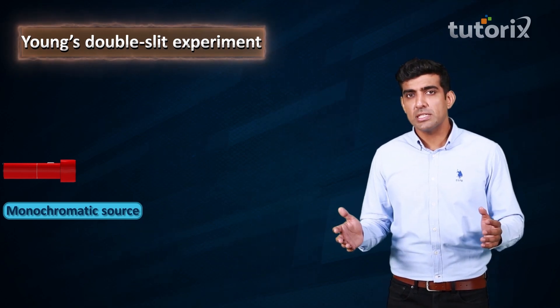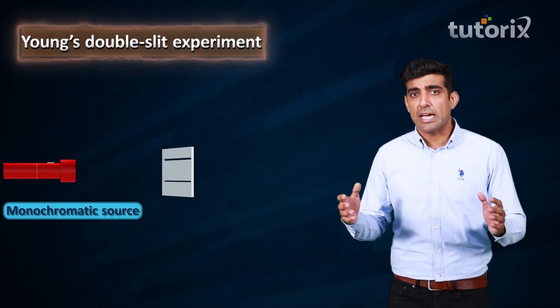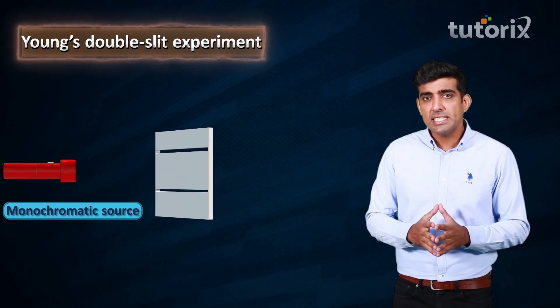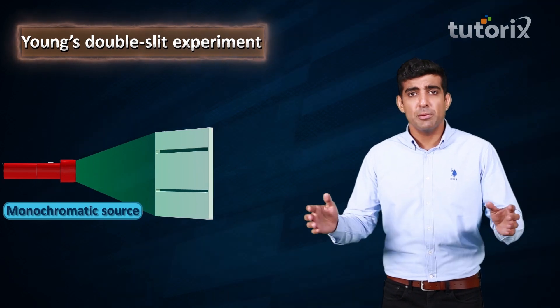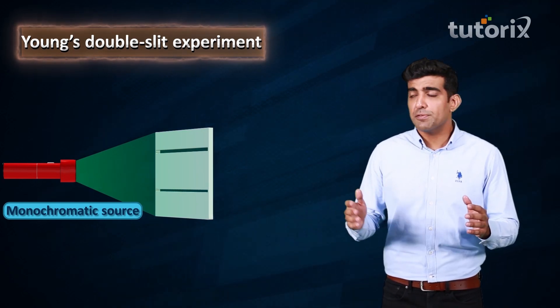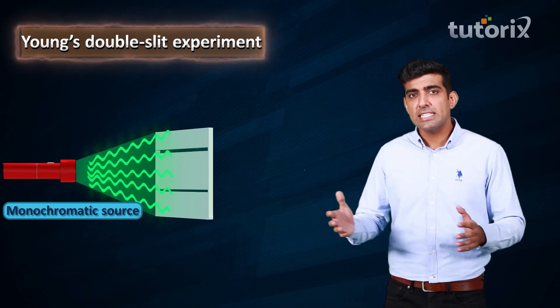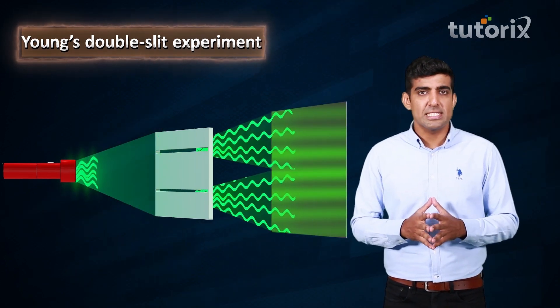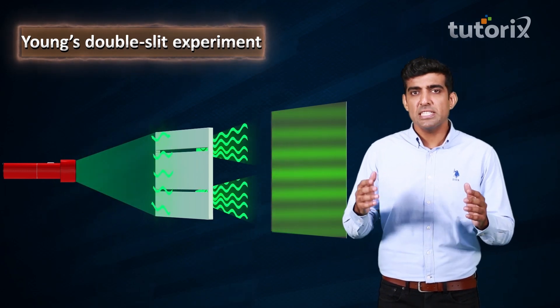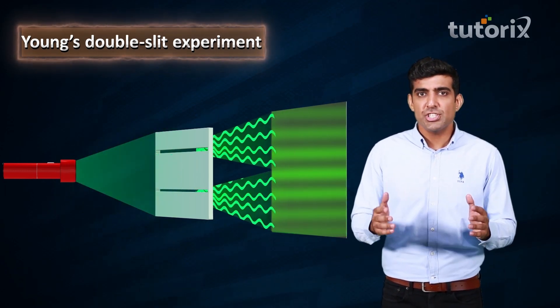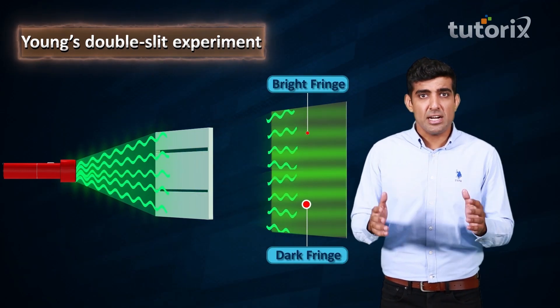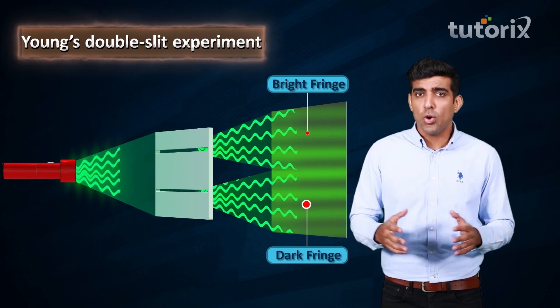In the double slit experiment, instead of the two pinholes, we use long narrow slits. These long narrow slits are illuminated by a monochromatic parallel beam of light. Light coming out of these two slits is intercepted on a screen placed parallel to the plane of the two slits. The interference pattern observed in such a case is in the shape of bright and dark strips, which are called fringes.